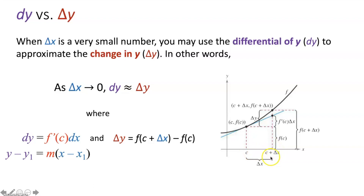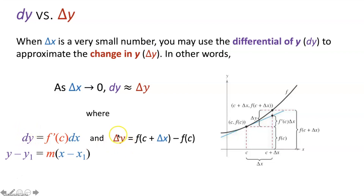As delta x gets smaller and smaller, this point on our graph gets closer and closer to the point of tangency, and the point on our tangent line also gets closer to the point of tangency. The difference between these two points becomes almost negligible as delta x approaches 0 — that's why we're allowed to use dy to approximate delta y.